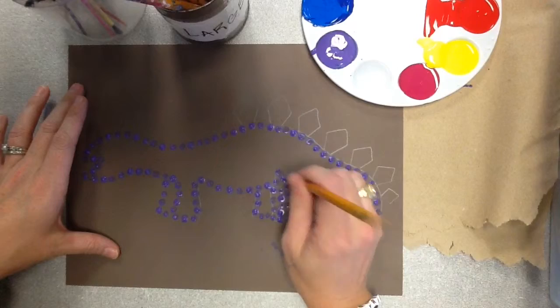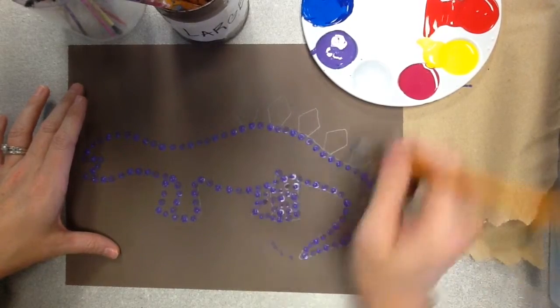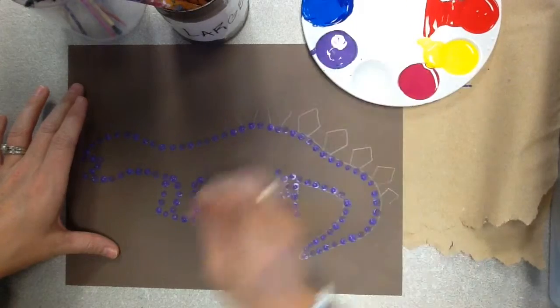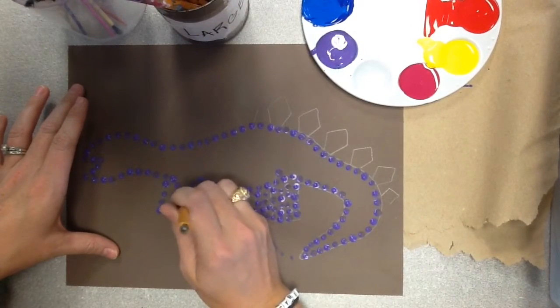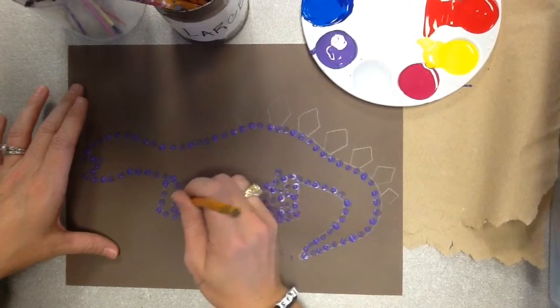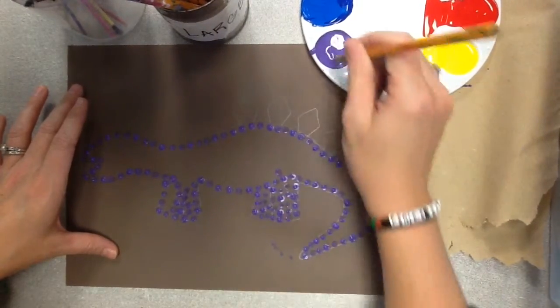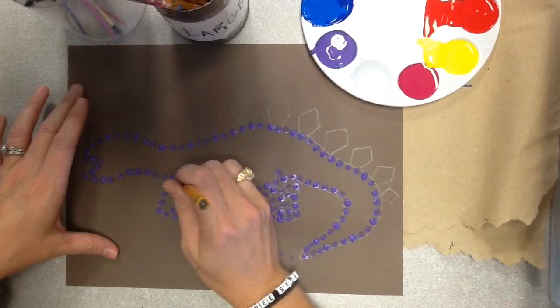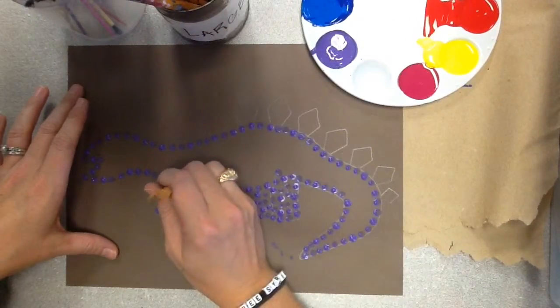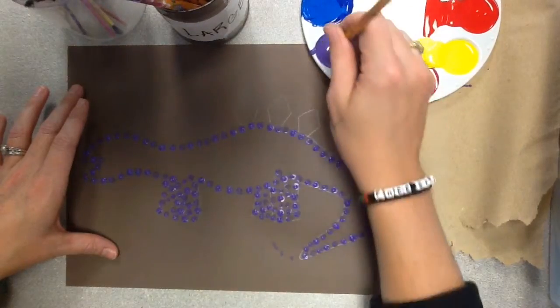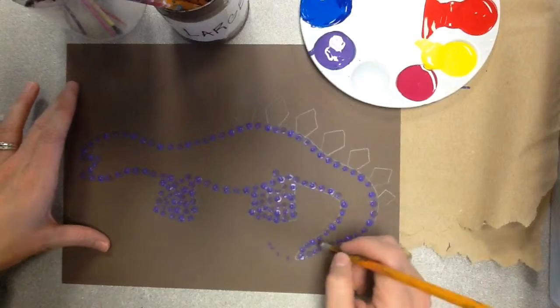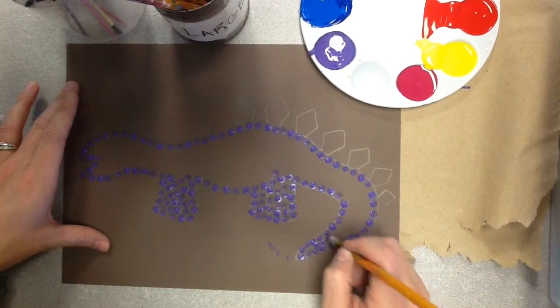So I'm going to go ahead and fill in my feet first. And again, you're trying to keep the dots close to each other and try not to let them touch. But if they do touch, it's not that big of a deal. You just want to be neat about this. Okay, so now I have my feet filled in. I think I'm going to go fill in my tail next.